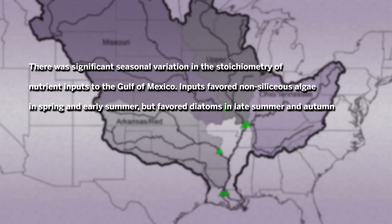Third, there was significant seasonal variation in the stoichiometry of nutrient inputs to the Gulf of Mexico. Inputs favored non-silicious algae in spring and early summer, but favored diatoms in late summer and autumn. There are additional results and details in the paper, and I hope you will give it a read.